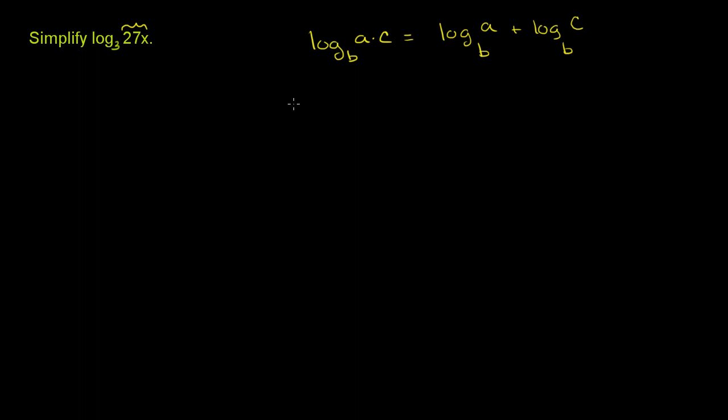But it's even better if you know the intuition. So let's say that log base b of a times c is equal to x. So this thing right over here evaluates to x. Let's say that this thing right over here evaluates to y. So log base b of a is equal to y. And let's say that this thing over here evaluates to z. So log base b of c is equal to z.